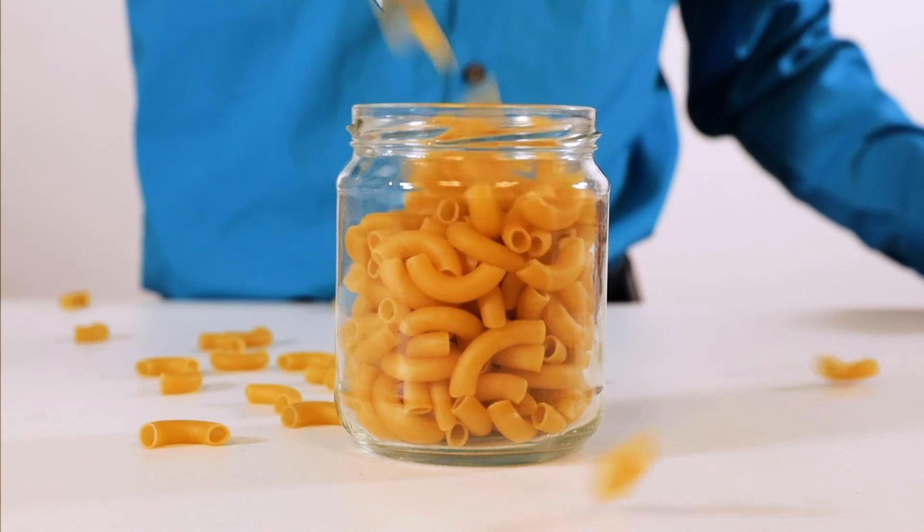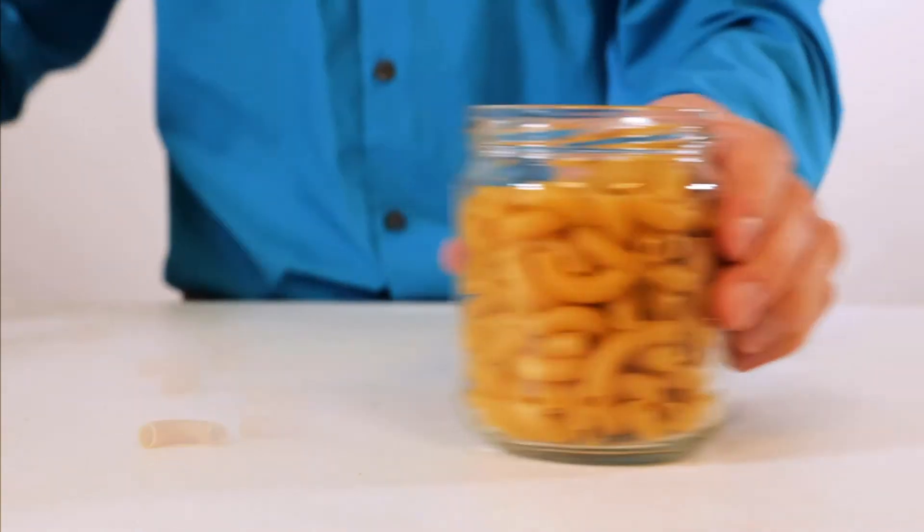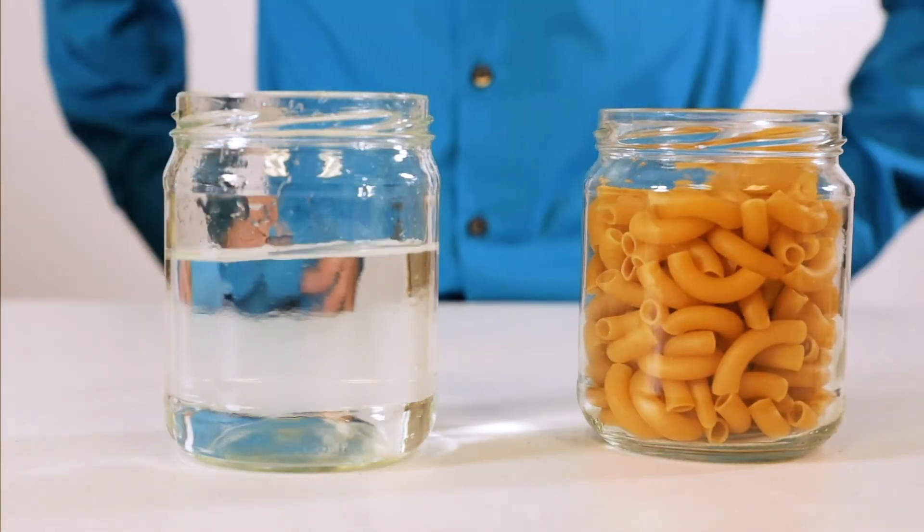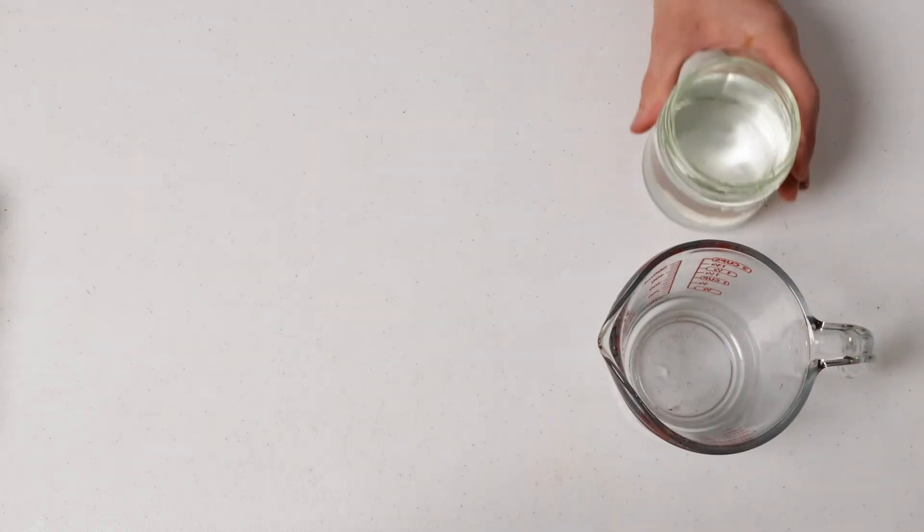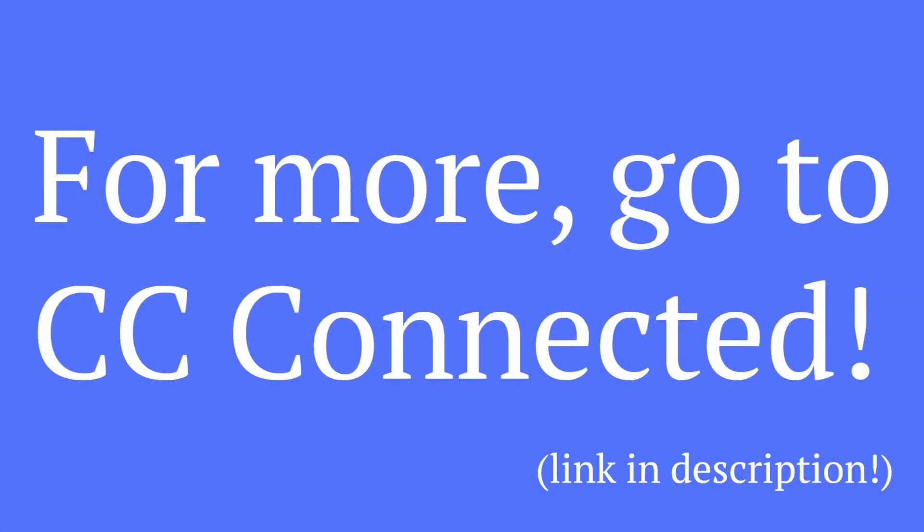The pockets are too small to see, but we can use science to prove they're there. You'll need a measuring cup, water, rubbing alcohol, some food coloring...